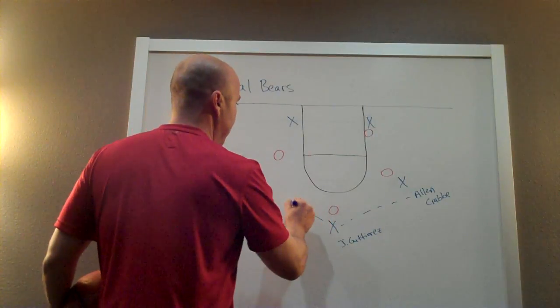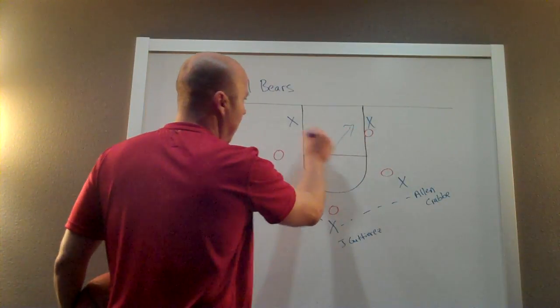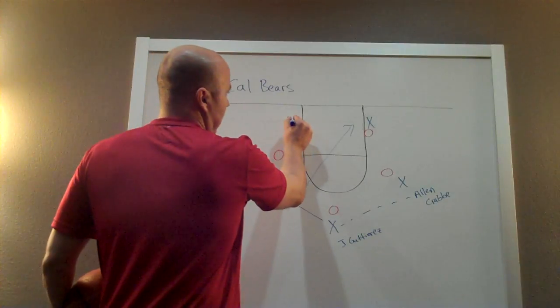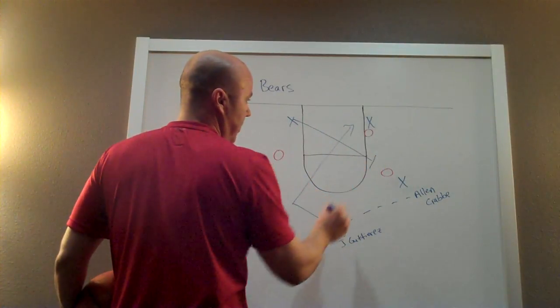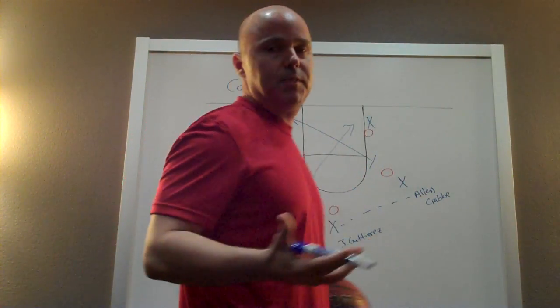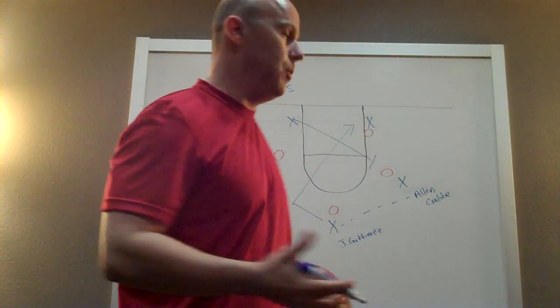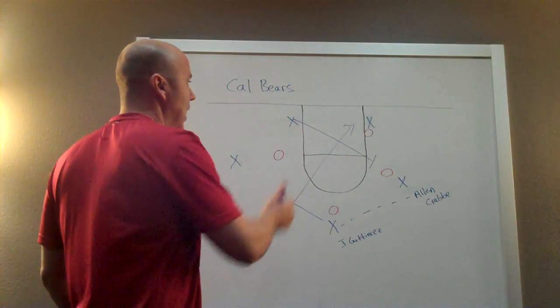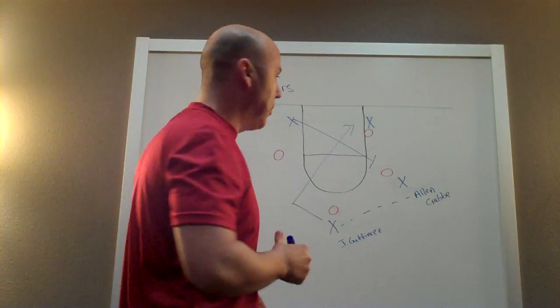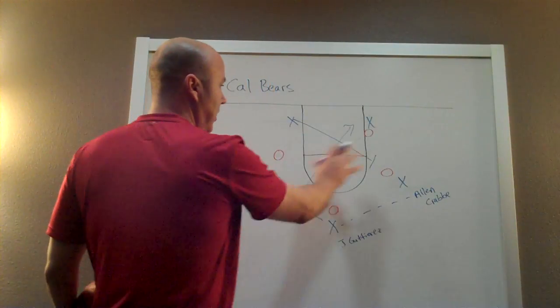Now as this is happening, the opposite low block defender is going to come up and set, which is basically a pick and pop or pick and roll situation for himself and Crabb. And usually this is Camp, their scoring big man. So as this is unfolding,